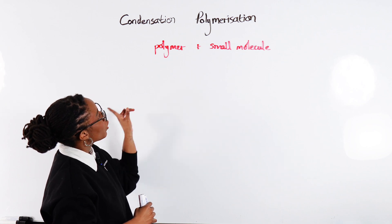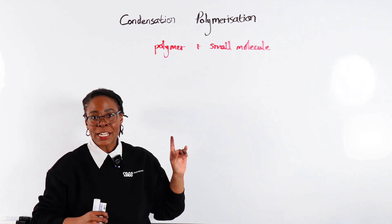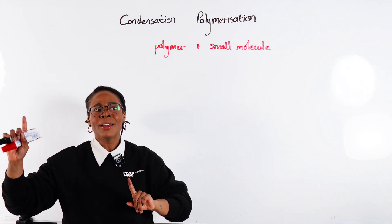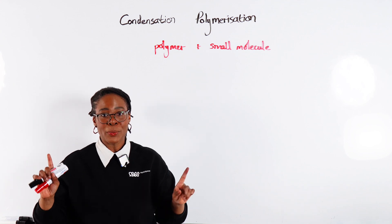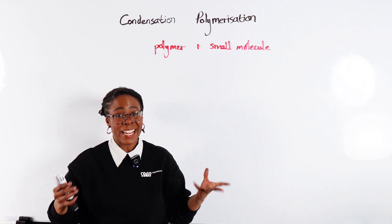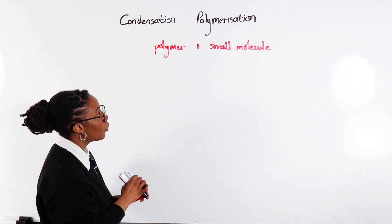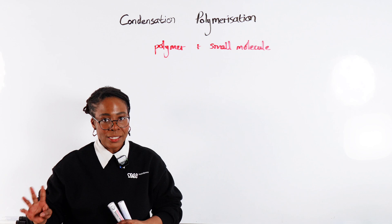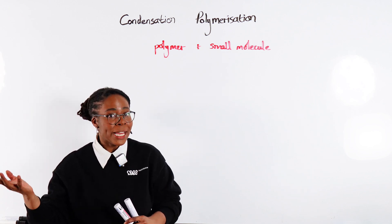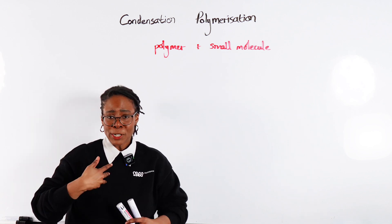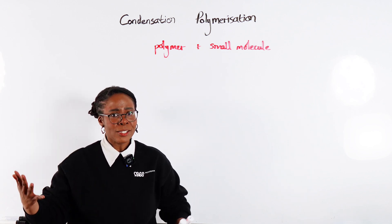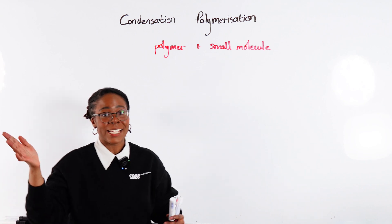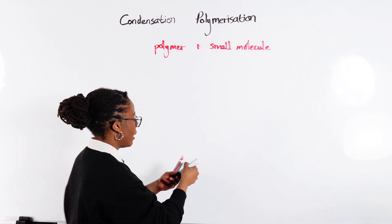When it comes to condensation polymerization there are two main types of condensation polymers that we should recognize, again based on functional groups that we've seen before. The first one is polyesters. But before we can talk about polyesters, let's make sure we know what esters look like — and then polyesters become really easy as a result of that.